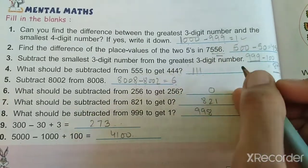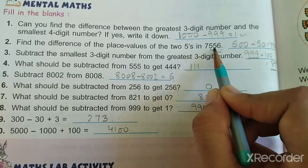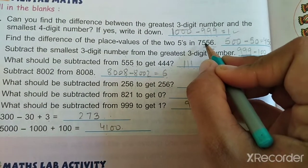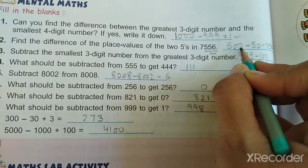Next question: Find the difference of the place values of two 5s in this number. Clearly we can see 500 is one place value and 50 is the second place value. So 500 minus 50 is 450. 450 is the answer.